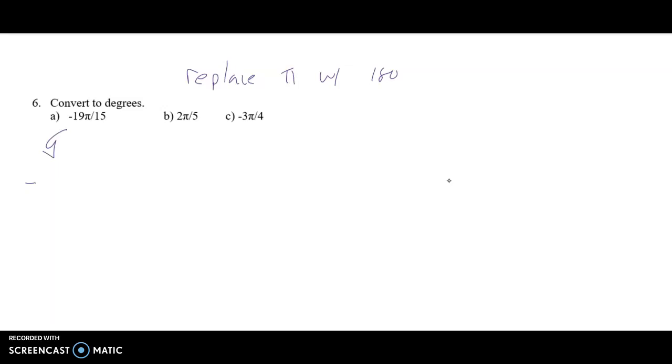So, on this first one, I take negative 19. There's a pi right there. So I'll write 180. It's being multiplied. And then I'm going to divide it by 15. I type that into my calculator, and I get negative 228 degrees.